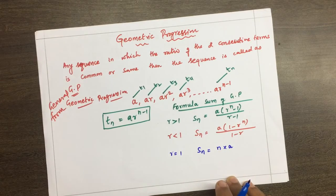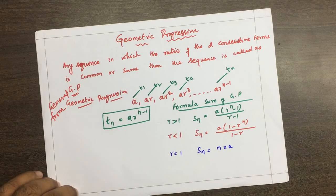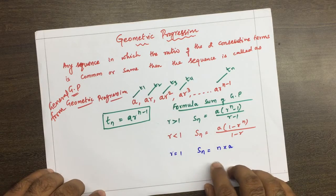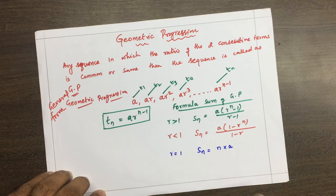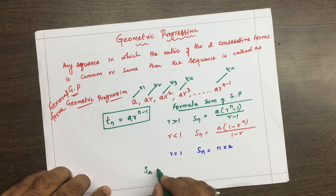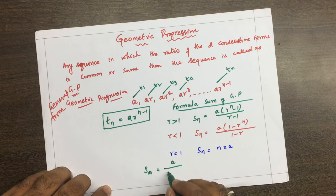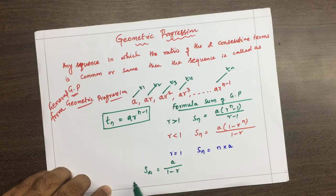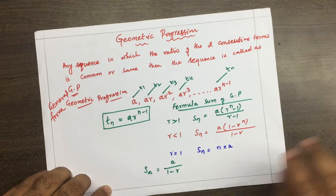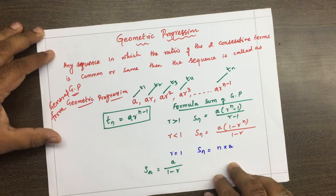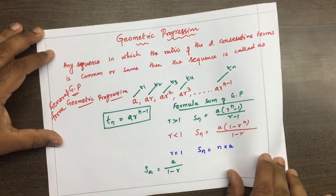These are the three formulas for finding the sum of n terms of the geometric series. The sum up to infinity of the geometric series is given by a divided by (1 − r). So these are the four different formulas we are going to use in finding the sum of the geometric series.